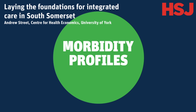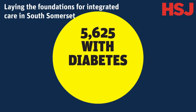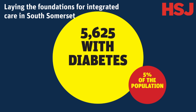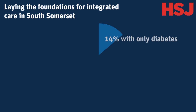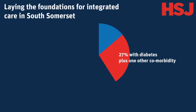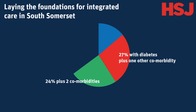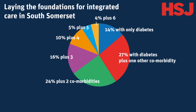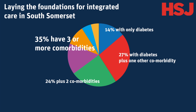Let's take diabetes for example. 5,625 people in South Somerset have been diagnosed with diabetes, some 5% of the population. But of these, only 14% have diabetes alone. 27% of those with diabetes have one other comorbidity and 24% have two other comorbidities. 35% of those with diabetes have three or more comorbidities.